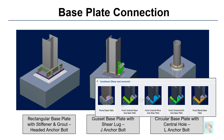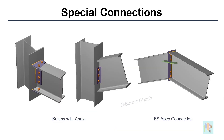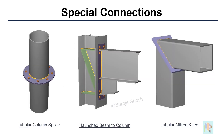These are the most commonly used connection templates. Apart from these, there are several other useful connections: tubular truss and chevron connections with directly welded and gusseted branch configuration, bend plate and apex connections, mitered knee for hollow sections, and haunch connections with additional stiffeners in the column.